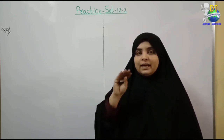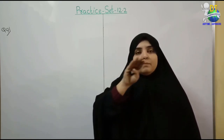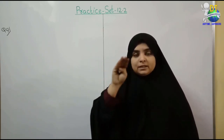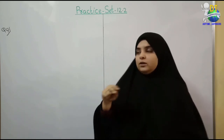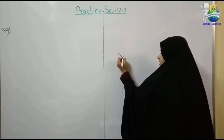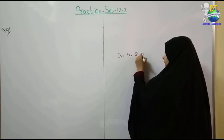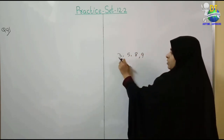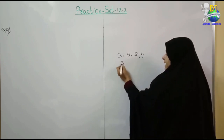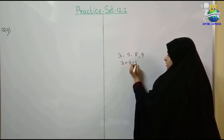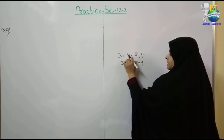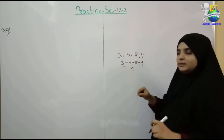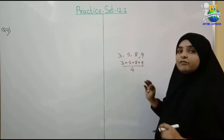Average का formula क्या है? Sum of all scores divided by number of scores. Suppose these are the numbers: 3, 5, 8, 9 — इनका average निकालना है। तो कैसे निकालेंगे? इन सबका addition करेंगे पहले। यह कितने numbers हैं total? One, two, three, four — and divide by four. तो जो answer आएगा इन numbers का average होगा।